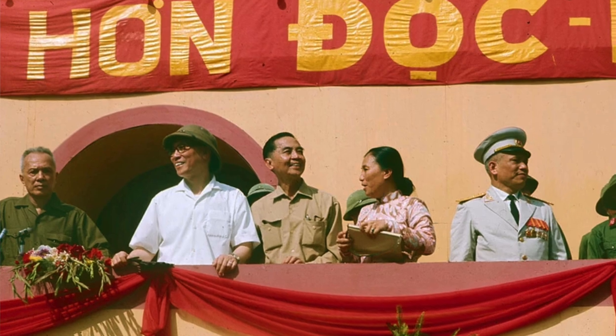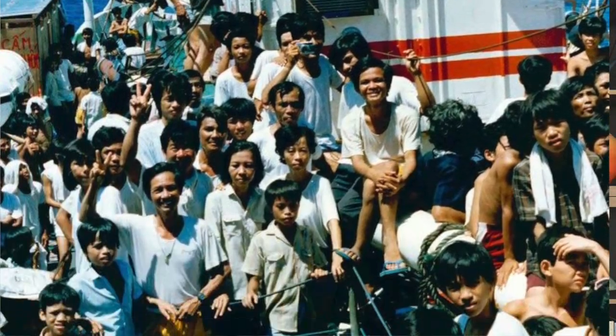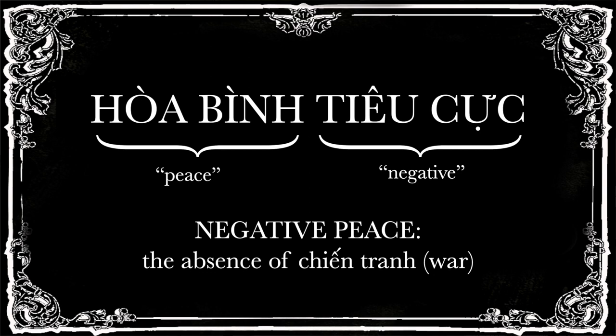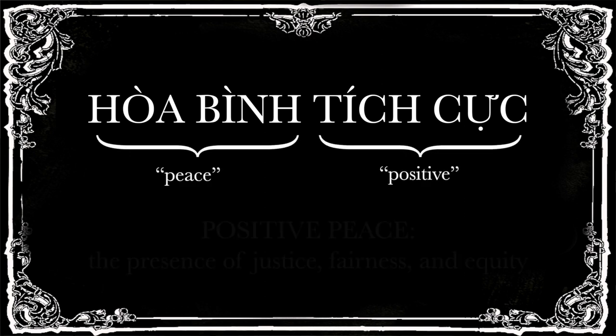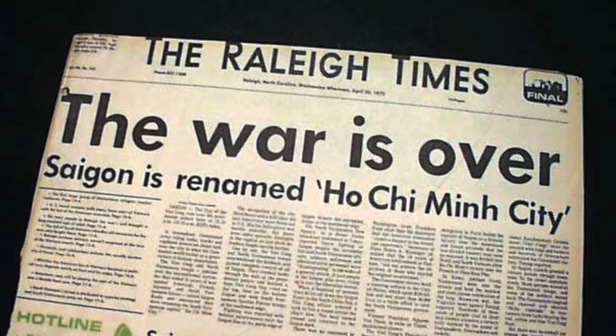Such a setup is still a very contentious issue among both local and overseas Vietnamese, who question whether this stable but intellectually limited system is the best way to govern. Slightly less contentious but still a good topic of discussion was the name I proposed for April 30th — ngày hòa bình, the day of peace. In politics, there are actually two kinds of peace: negative peace, hòa bình tiêu cực, which is the lack of large-scale violence; and positive peace, hòa bình tích cực, which is not just the absence of war, but the presence of justice, fairness, and equity. When I refer to April 30th as the day peace arrived, I'm referring more to negative peace. Whether we have positive peace in Vietnam today is still up for debate.